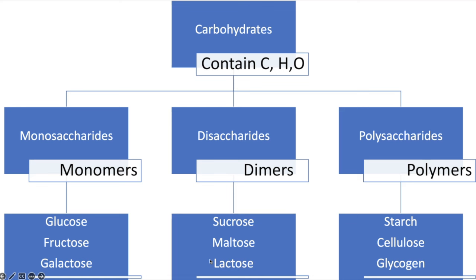Carbohydrates are made of carbon, hydrogen and oxygen, and can be categorised as monosaccharides, disaccharides and polysaccharides. Mono means one, saccharide means sugar, so a monosaccharide is a single sugar unit — the monomer. A disaccharide is a dimer — two sugars joined together. Polysaccharides are the polymers, with many sugar units bonded together.